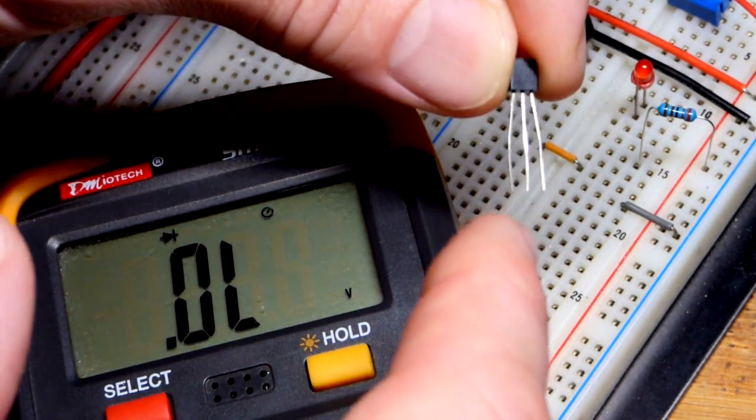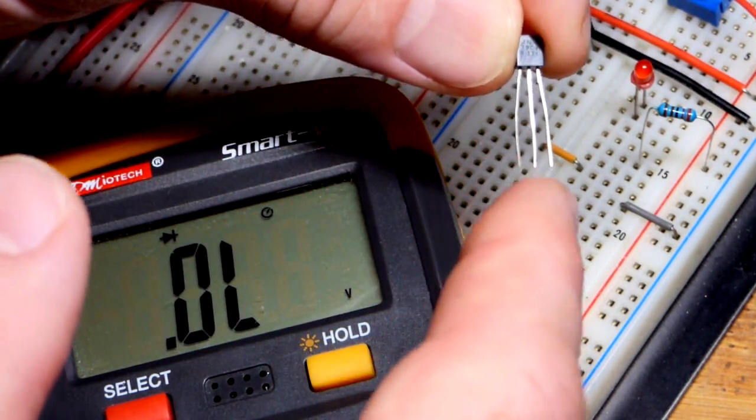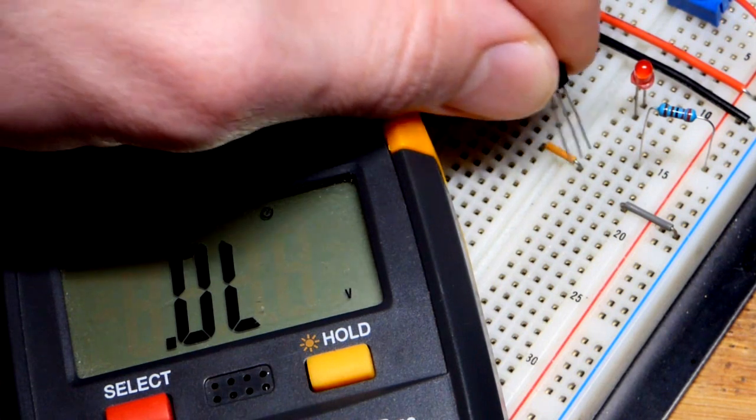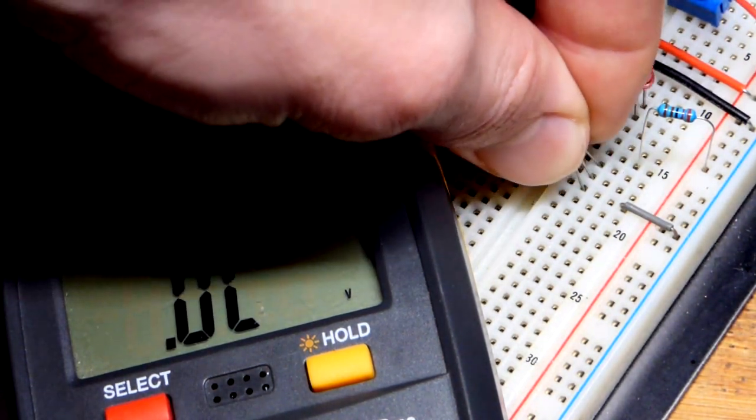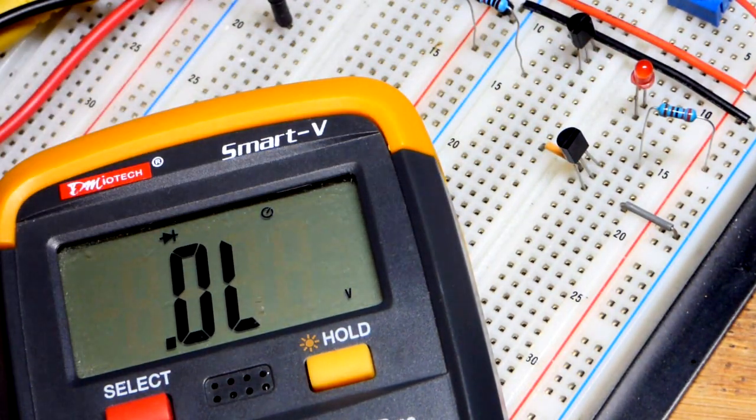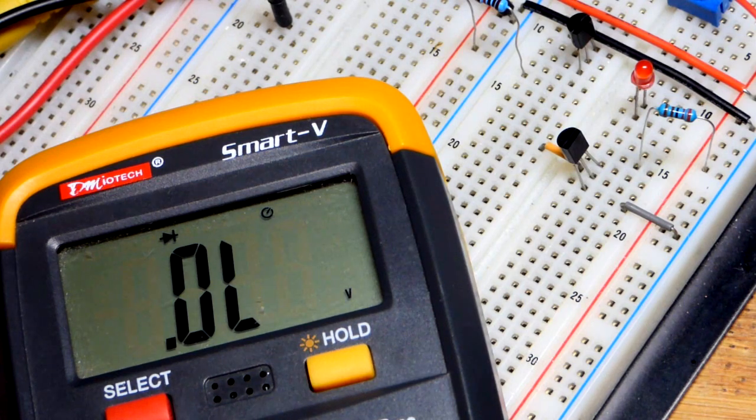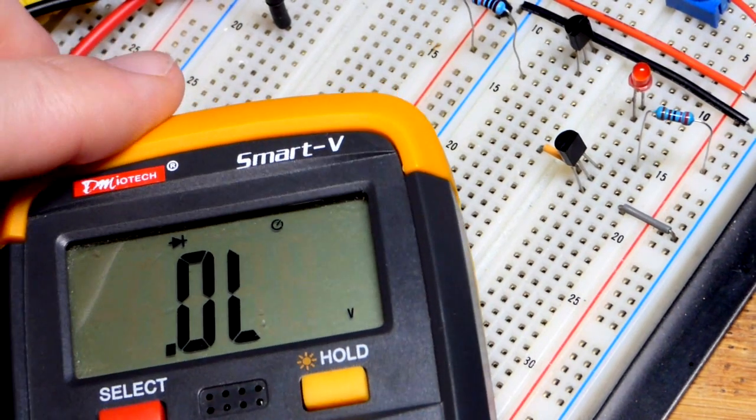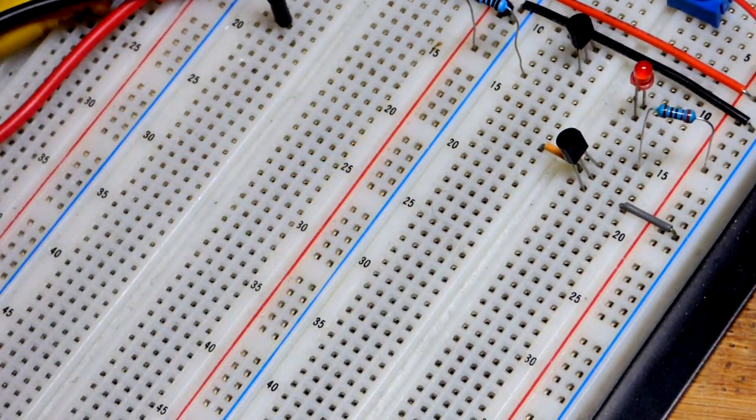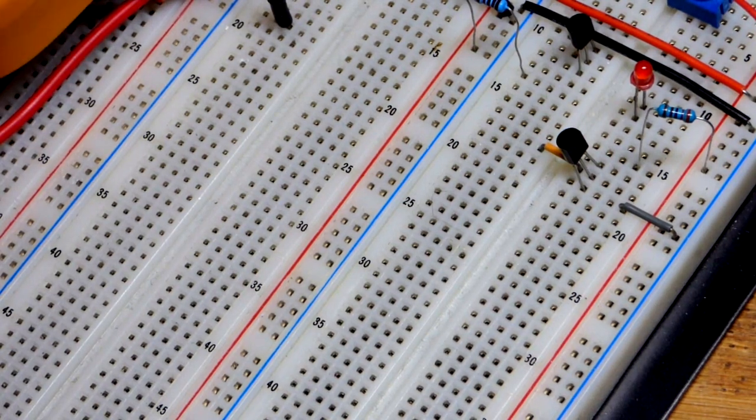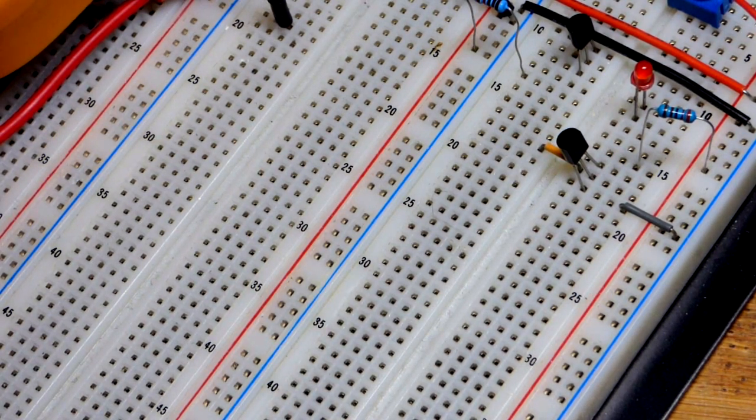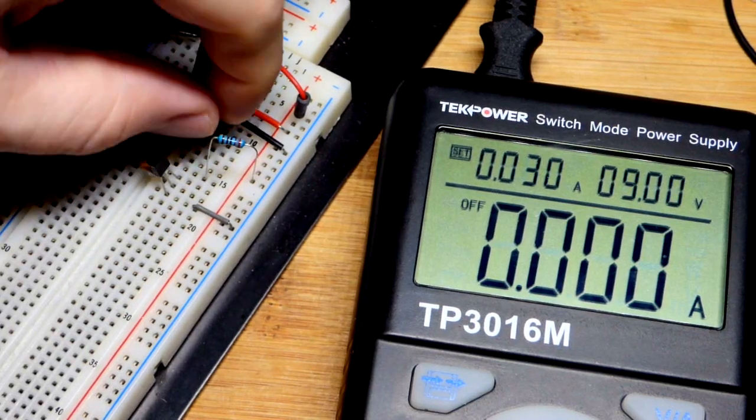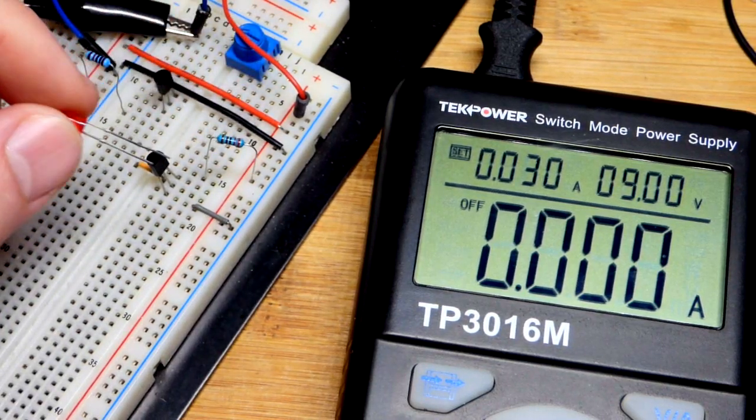But I find every one that starts with 2N, that's a bipolar junction transistor, whether it's N, P, N, or P, N, P, has the pin layout emitter, base, collector. And you should always verify with the data sheet. But in any case, we are going to, we don't need the meter anymore. We can use the power supply to figure out which one is the emitter and which one is the collector.